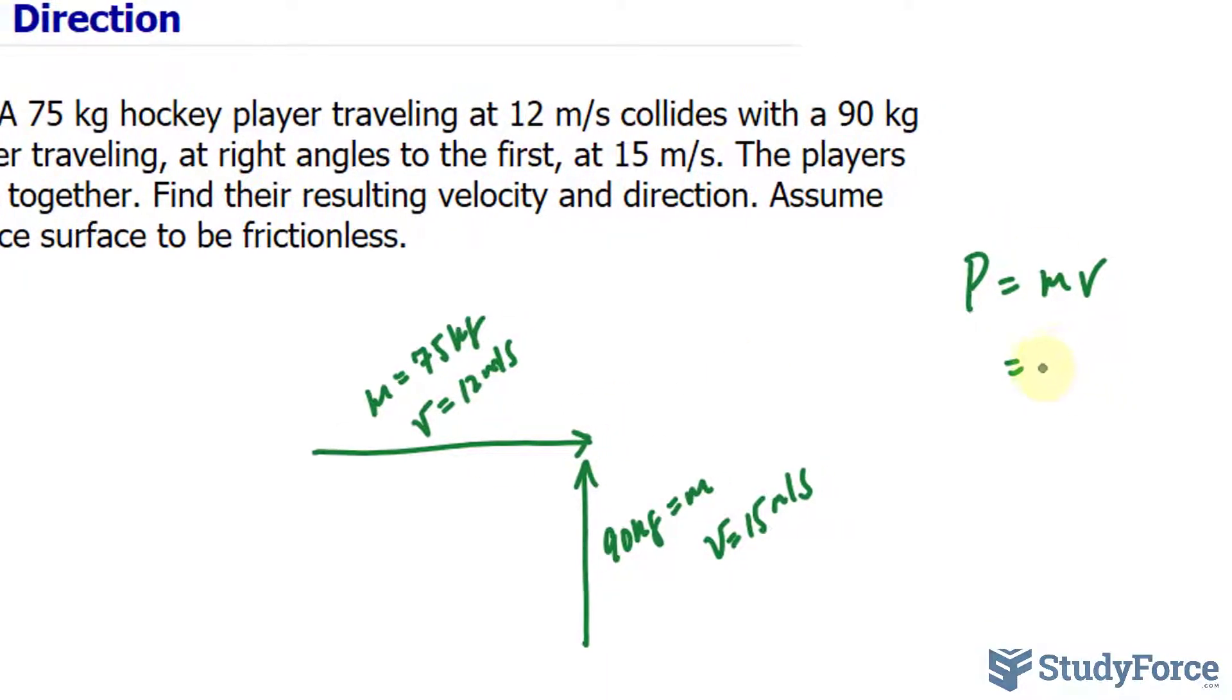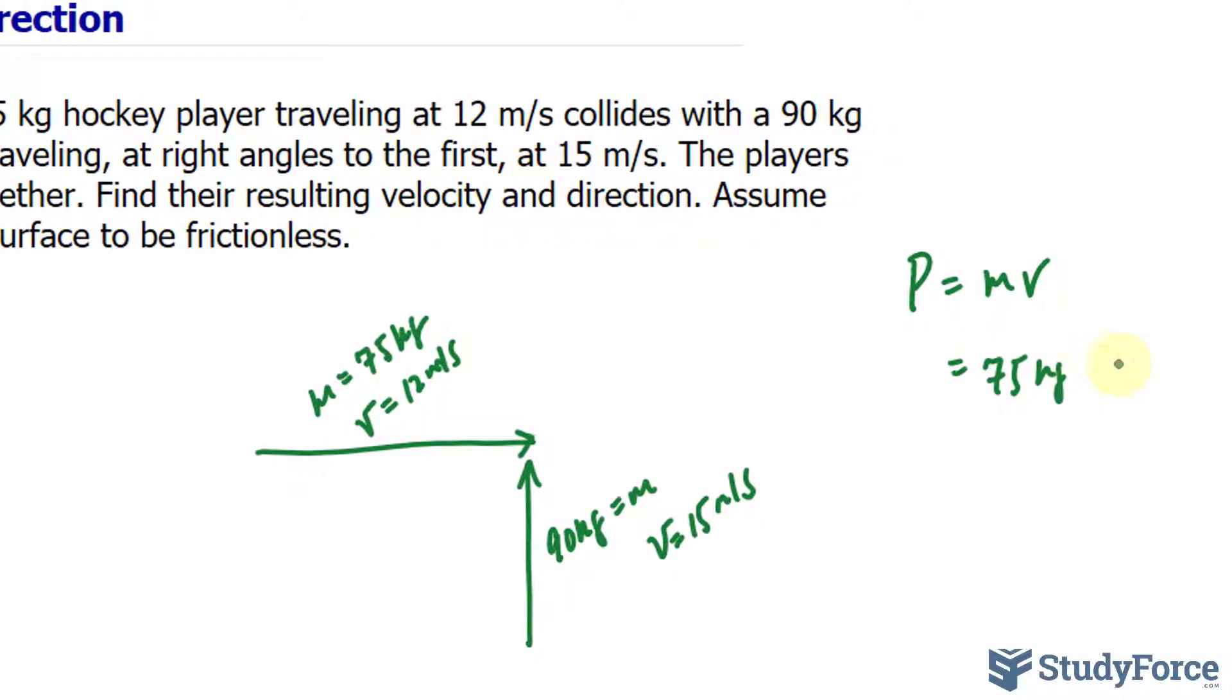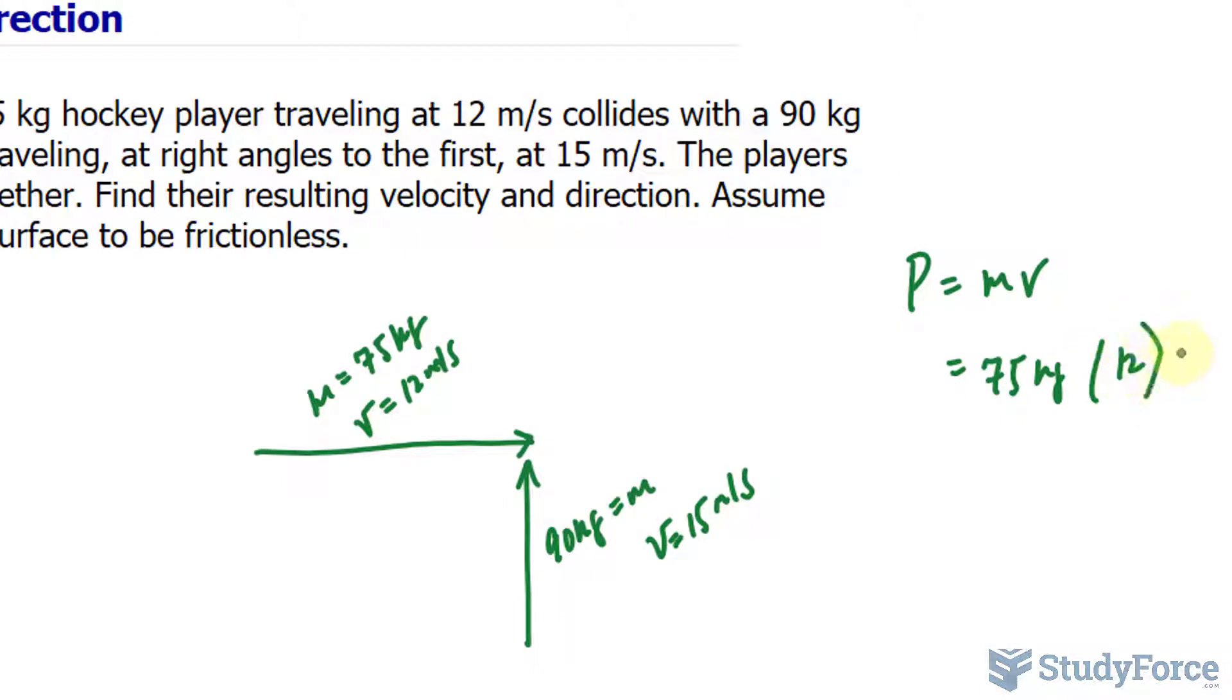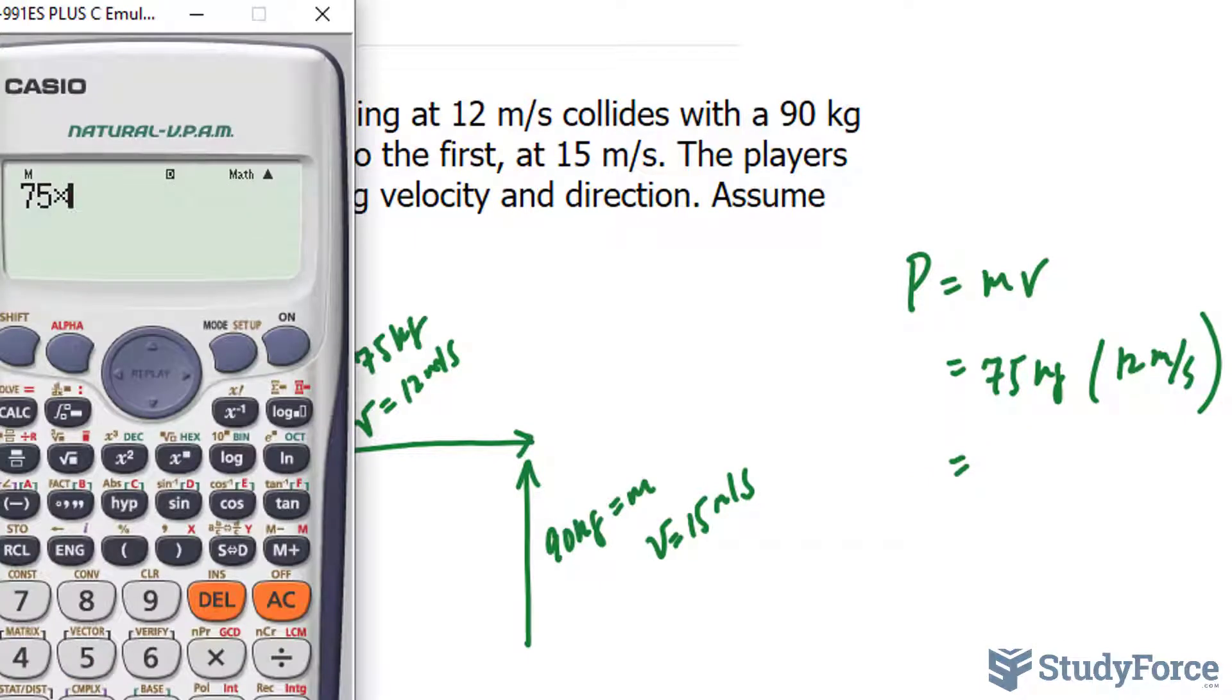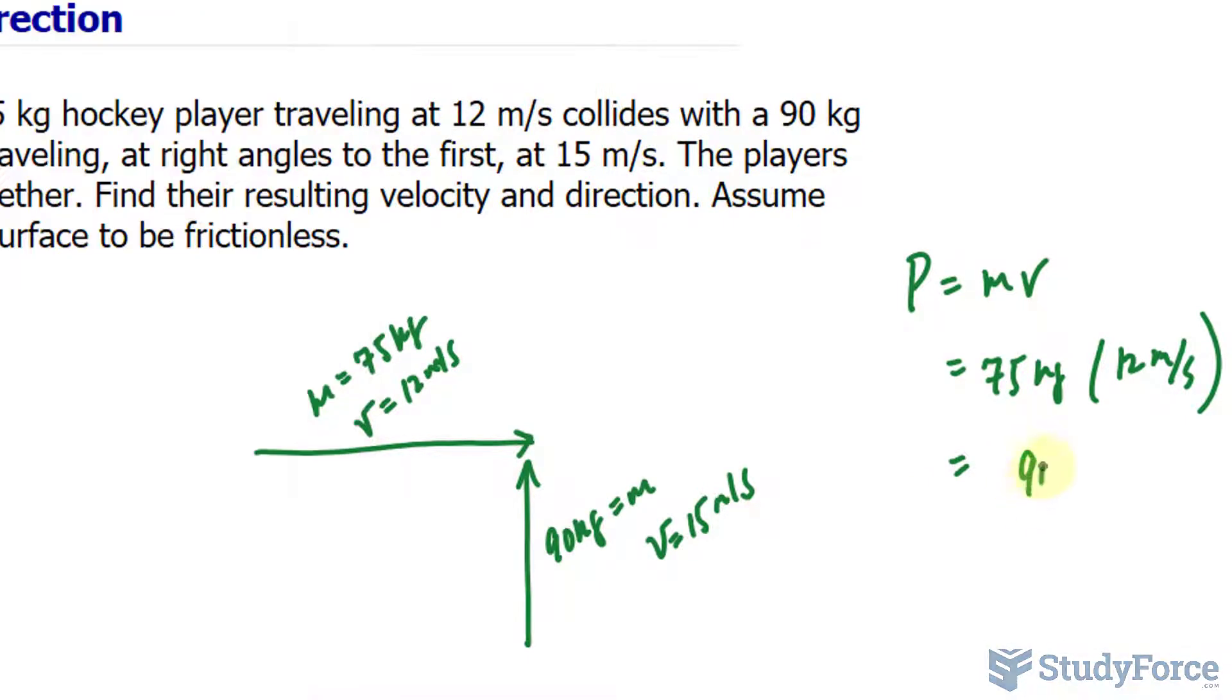So the momentum of this one is 75 kilograms times a velocity of 12, and let's include the units. So we have 75 times 12 makes 900 kilograms times meters per every one second.